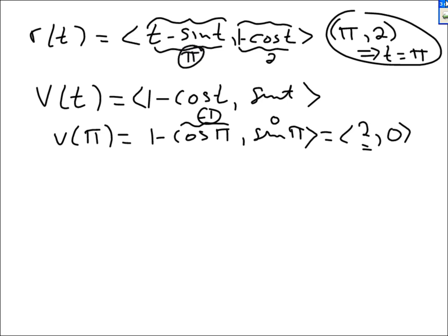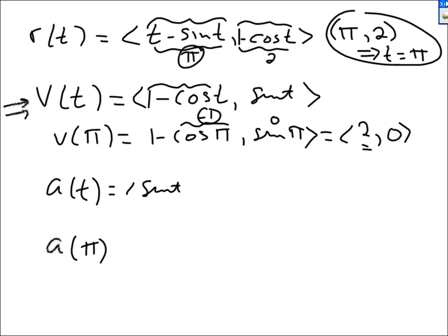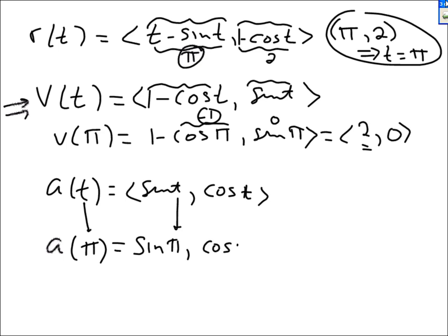Now we go to find a of t. You take the derivative of v to get a. The derivative of 1 minus cosine t is sine t. The derivative of sine t is cosine t. So a of t is (sine t, cosine t). For a of π: sine of π is 0, and cosine of π is negative 1. So a of π is (0, negative 1).